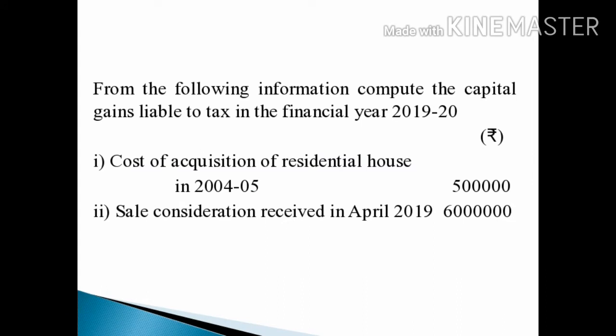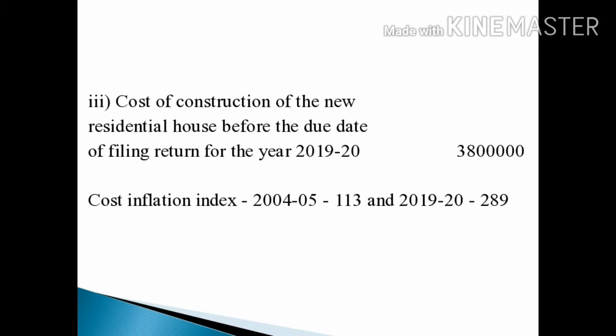We are going to discuss the question: From the following information, compute the Capital Gains liable to tax in the financial year 2019-20. First, Cost of Acquisition of Residential House in 2004-05: Rs. 5 lakhs. Second, Sale Consideration received in April 2019: Rs. 60 lakhs. Third, Cost of Construction of the New Residential House before the due date of filing return for the year 2019-20: Rs. 38 lakhs. Cost Inflation Index: 2004-05 is 113, and 2019-20 is 289.